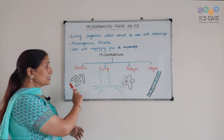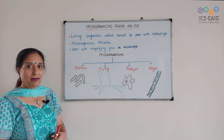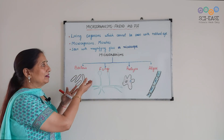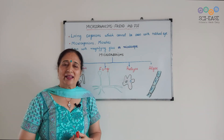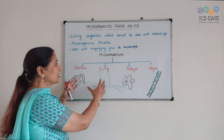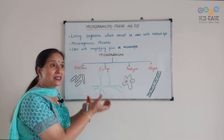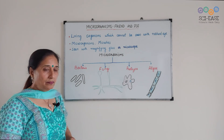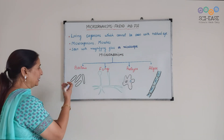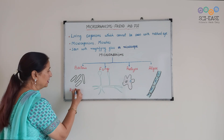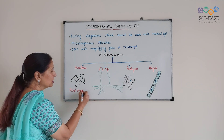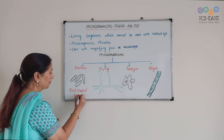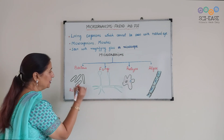I have drawn big diagrams of these, showing what we see under the microscope, since we can't see bacteria or protozoans with our naked eye. These are rod-shaped bacteria. There are spiral bacteria also.